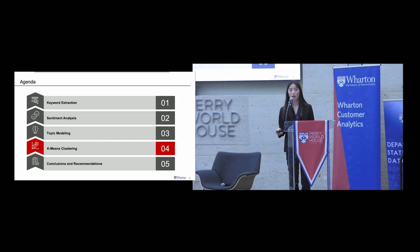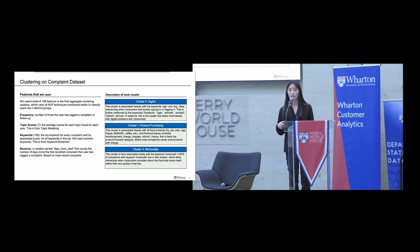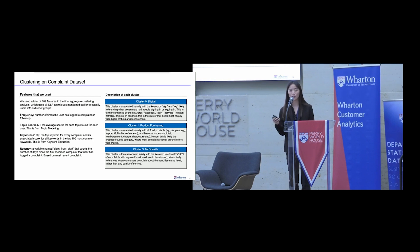After using these three models, we created a variety of business insights and quantitative data from the original customer complaints. In the next step, we use k-means clustering — an unsupervised machine learning model — to bring together all of the quantitative data we've created. We create a dataset where every row corresponds to a different customer, to create groups of customer profiles for McDonald's to use for complaint playbooks. Features include frequency (how many times a customer has logged a complaint), recency (how recently), and the keyword and topic scores generated by the three models. Running the clustering algorithm, we arrive at three distinct clusters: digital, product purchasing, and a general McDonald's complaint cluster.